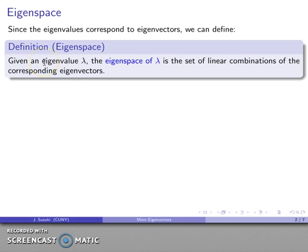So given any eigenvalue, the eigenspace is going to be the set of linear combinations of the corresponding eigenvectors. Now it's a set of linear combinations. We have vector addition, scalar multiplication defined.